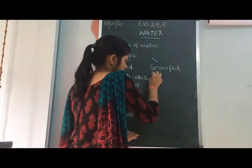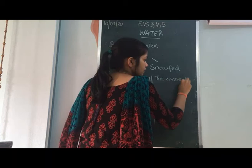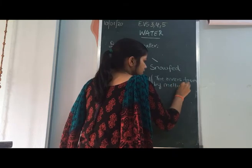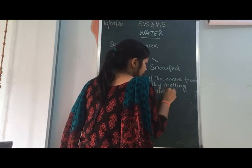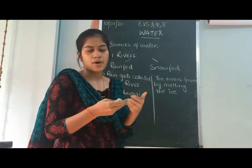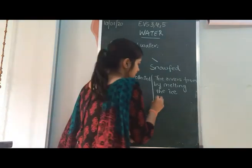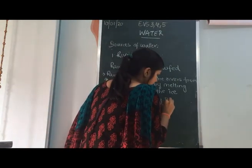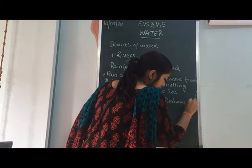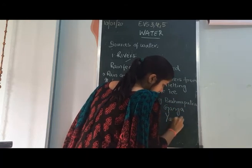Snow-fed rivers are rivers formed by the melting of ice from mountains. The water from melting ice mountains flows down and forms these rivers. The best examples of snow-fed rivers are Brahmaputra, Ganga, and Yamuna.